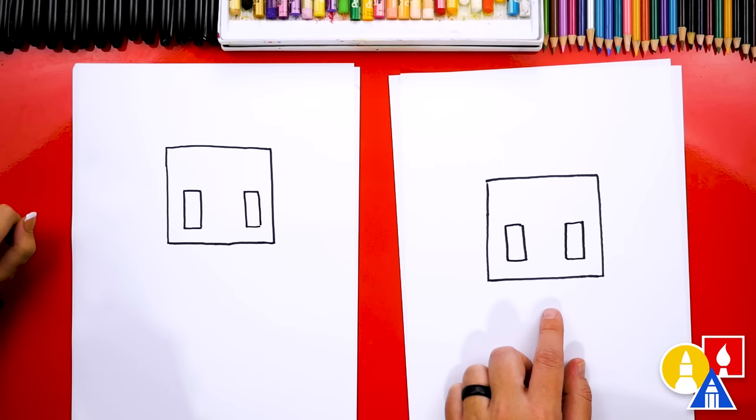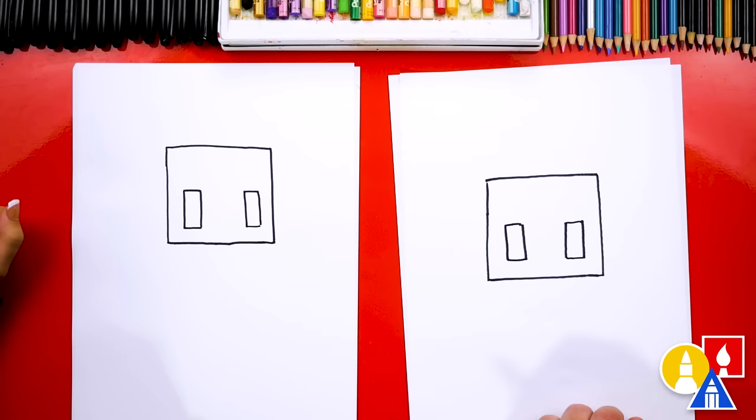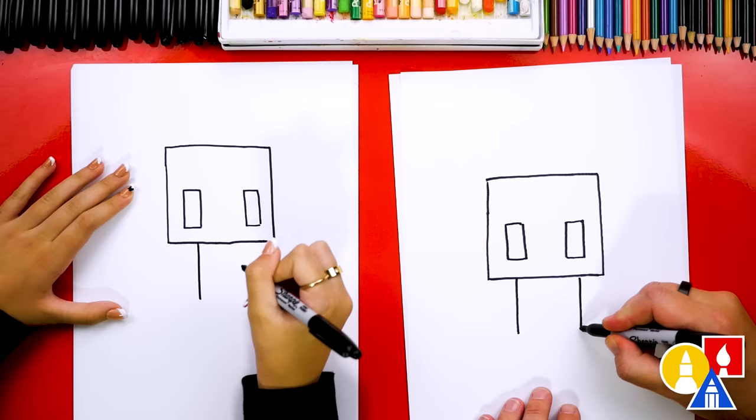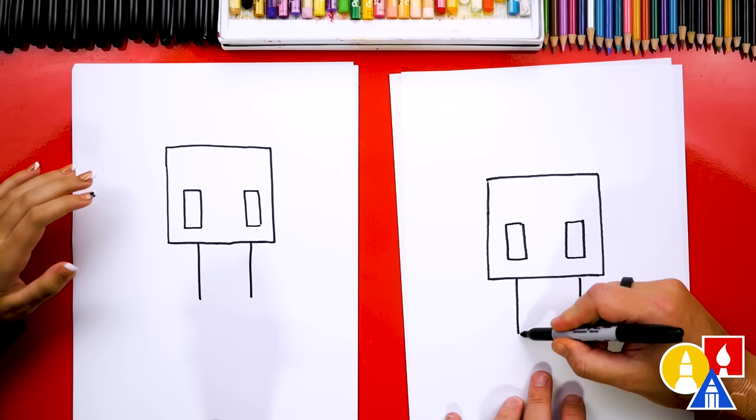In the game, they're actually a little bit closer together, but that's okay. I think it looks awesome just like this. Okay, now let's draw the body. We're gonna start by drawing a line down on the left and also a line down on the right. There you go. Then we can connect those lines together at the bottom.